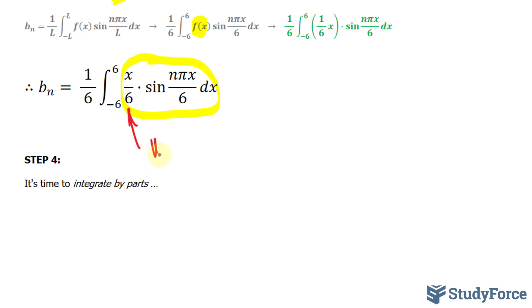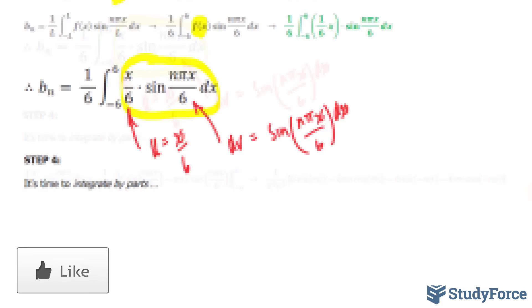But I'll fast forward all of that and show you what the function is. So just to be clear, this would be represented as your u, x over 6. And this part would be represented as dv, sin nπx over 6, dx. You'd find the derivative here implicitly and you would integrate this function and you would use the integration by parts technique. Now if you do it correctly, you should end up with the following function.